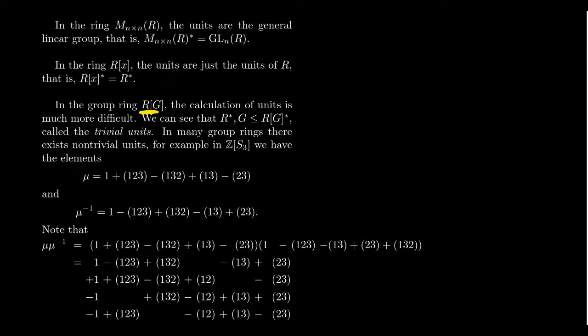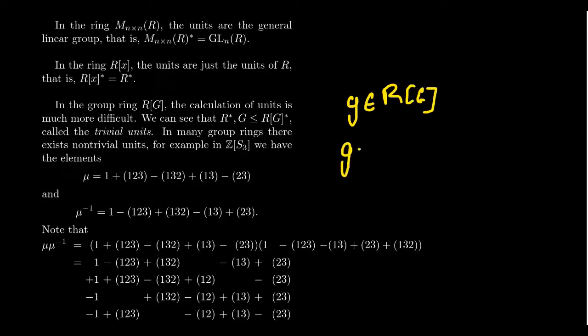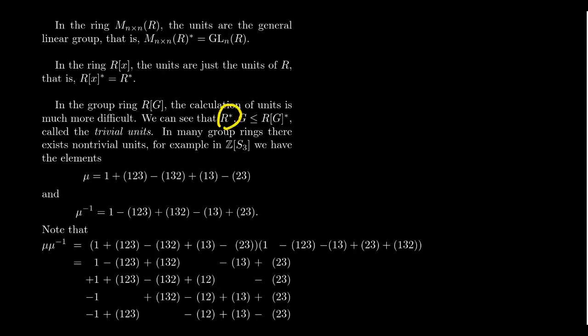If we have some group G and some ring R, then the calculation of units of the group ring is a lot more difficult. There are some obvious situations: the units of the coefficient ring will be inside the unit group, though equality is not expected. Also, the group G itself embeds in the unit group of the group ring, since each group element multiplied by its inverse gives the identity. These two classes — units of R and elements of G — are often referred to as the trivial units inside a group ring.